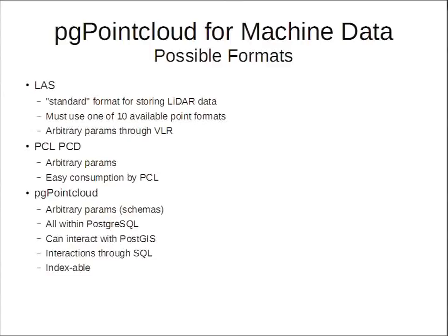LAS is the standard format for LiDAR data, but unfortunately it had to be one of ten available point formats — I don't know how many parameters I have for my points. It does allow arbitrary parameters through variable length records, but the APIs seem to treat that as a secondary process. I looked at PCL/PCD because my analytics teams want to consume PCL — those algorithms are already written. Arbitrary parameters are easy. But I wanted to eventually store point cloud information outside the database, and I don't have the time to hook that up yet. In the end it became PG Point Cloud.